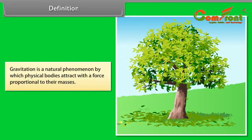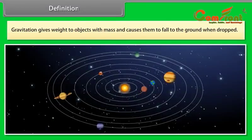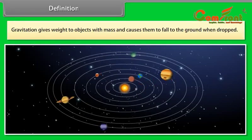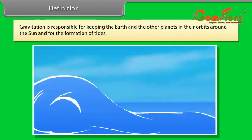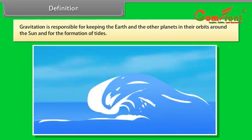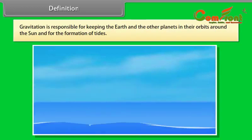Definition. Gravitation is a natural phenomenon by which physical bodies attract with a force proportional to their masses. Gravitation is most familiar as the agent that gives weight to objects with mass and causes them to fall to the ground when dropped. Gravitation is responsible for keeping the earth and the other planets in their orbit around the sun and for the formation of tides.